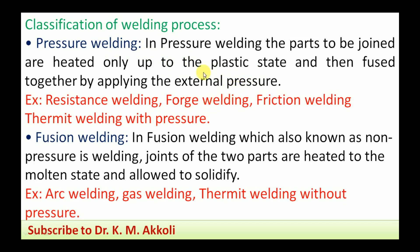Examples of pressure welding include resistance welding and forge welding. In resistance welding, when electricity is supplied, the resistance offered by the metal to electrical transmission generates heat. When the metal is heated to a plastic state, pressure is applied to weld together the two pieces. In forge welding, the metal is heated and hammered manually or by machine. After hammering, the two pieces in the plastic state get joined.